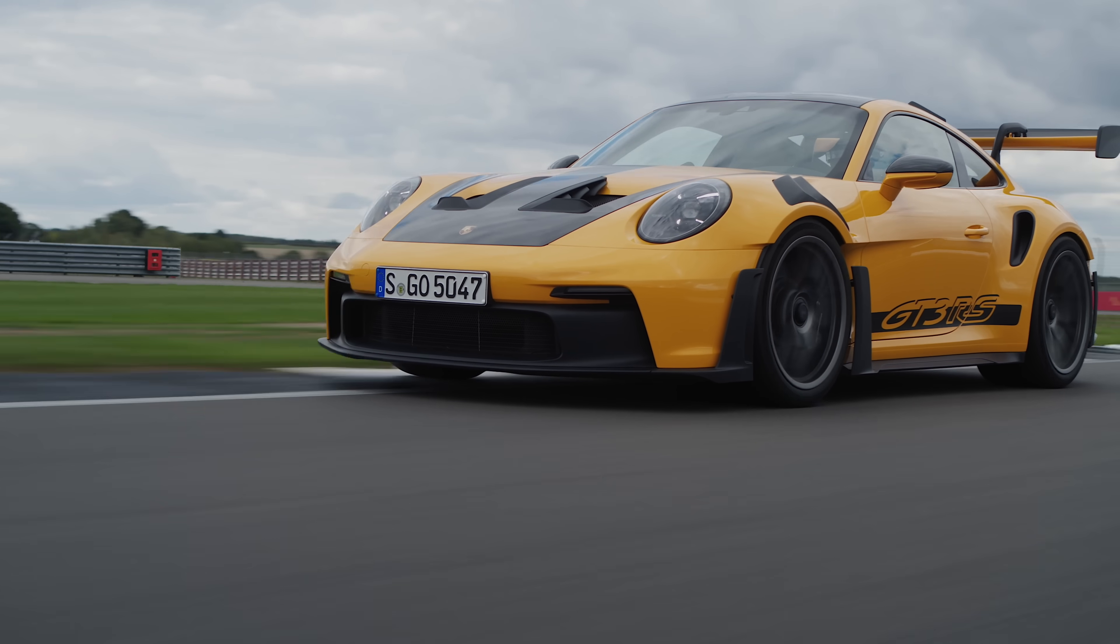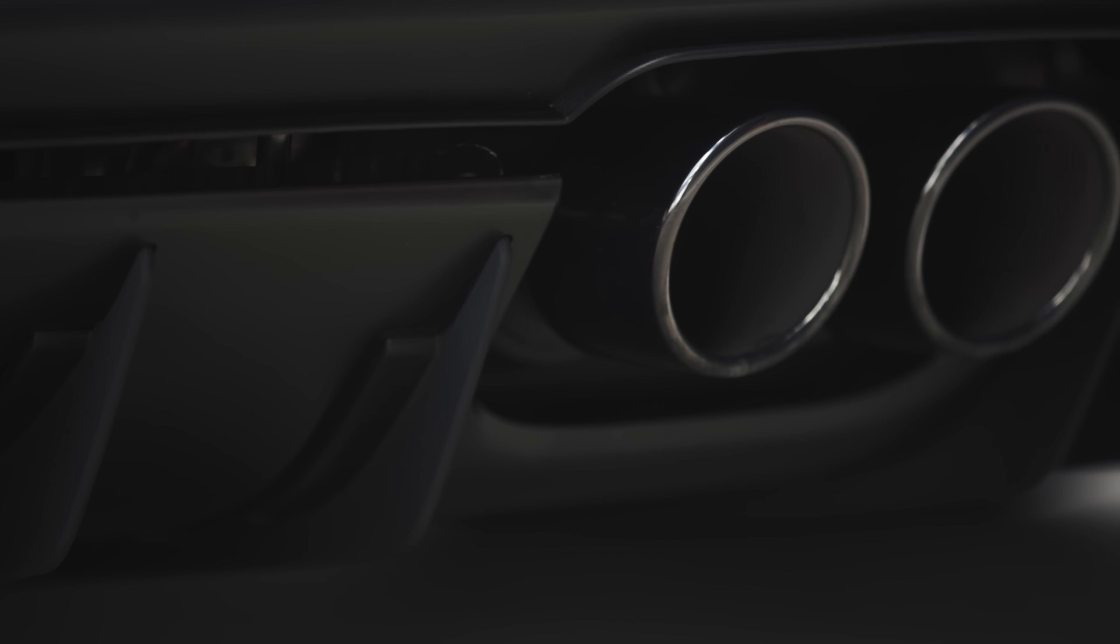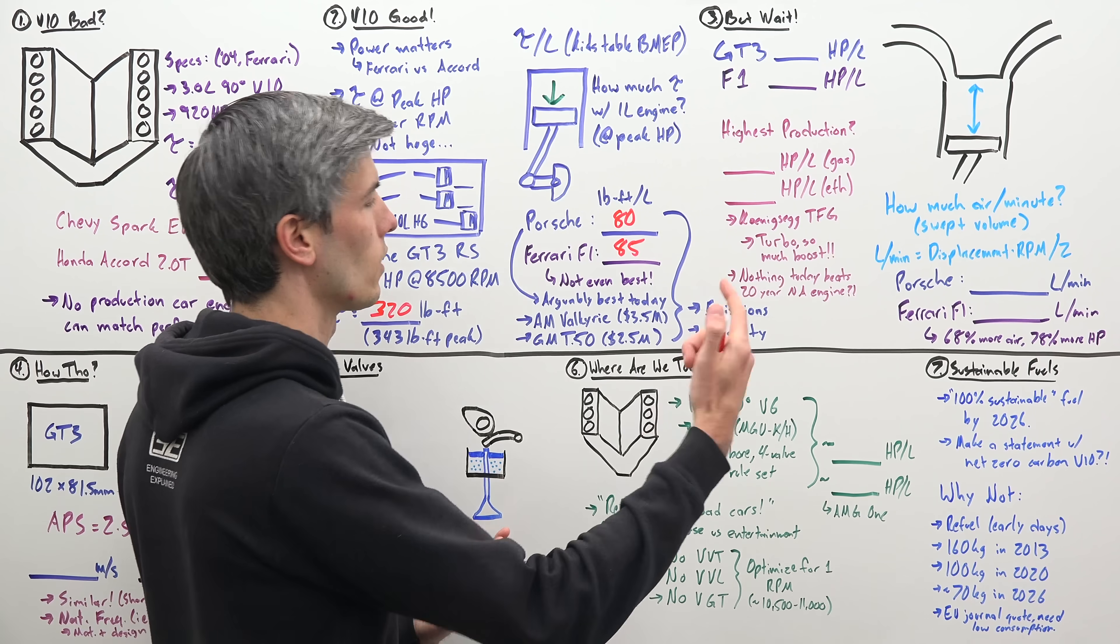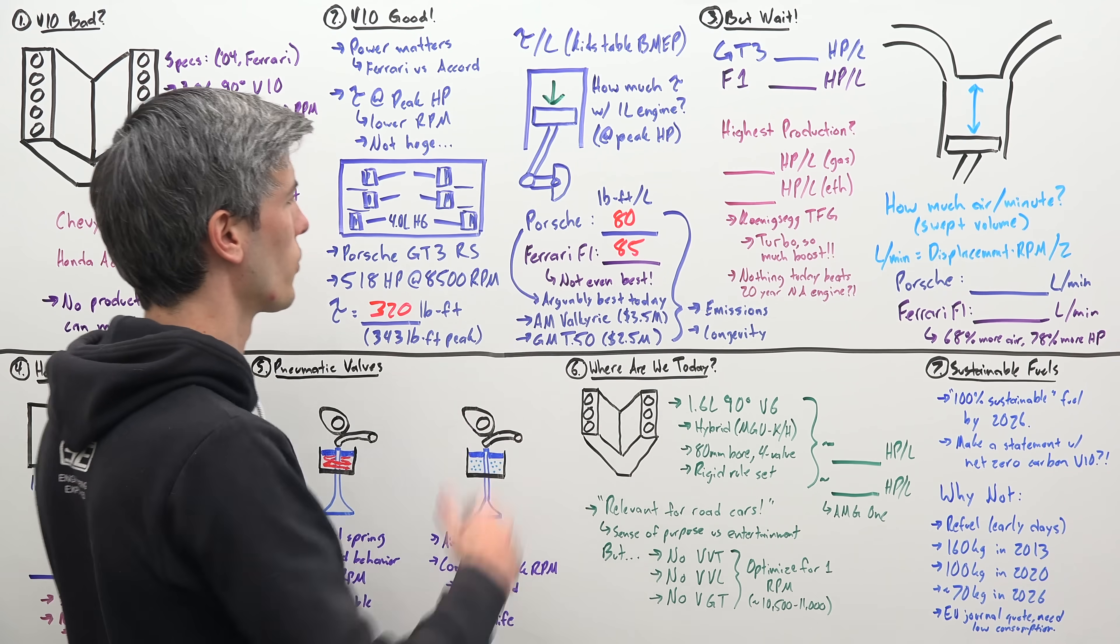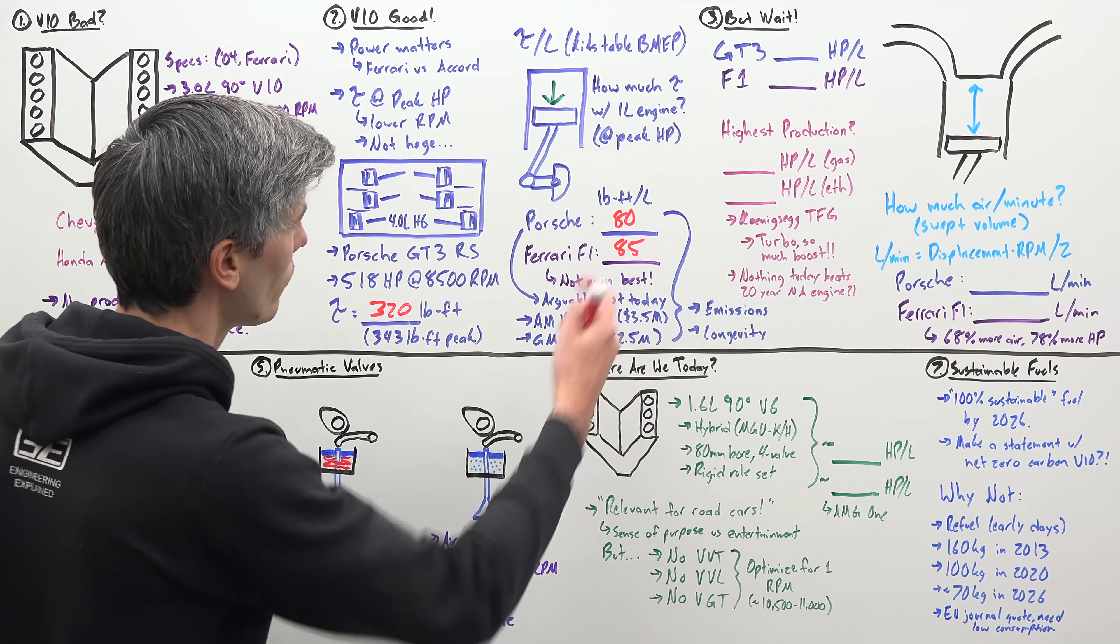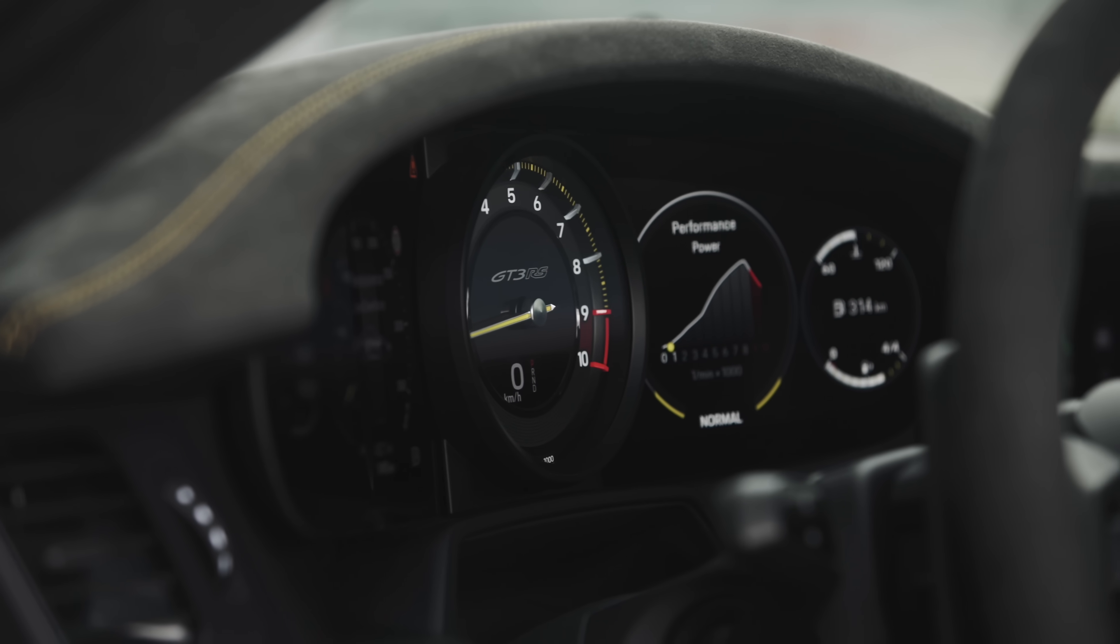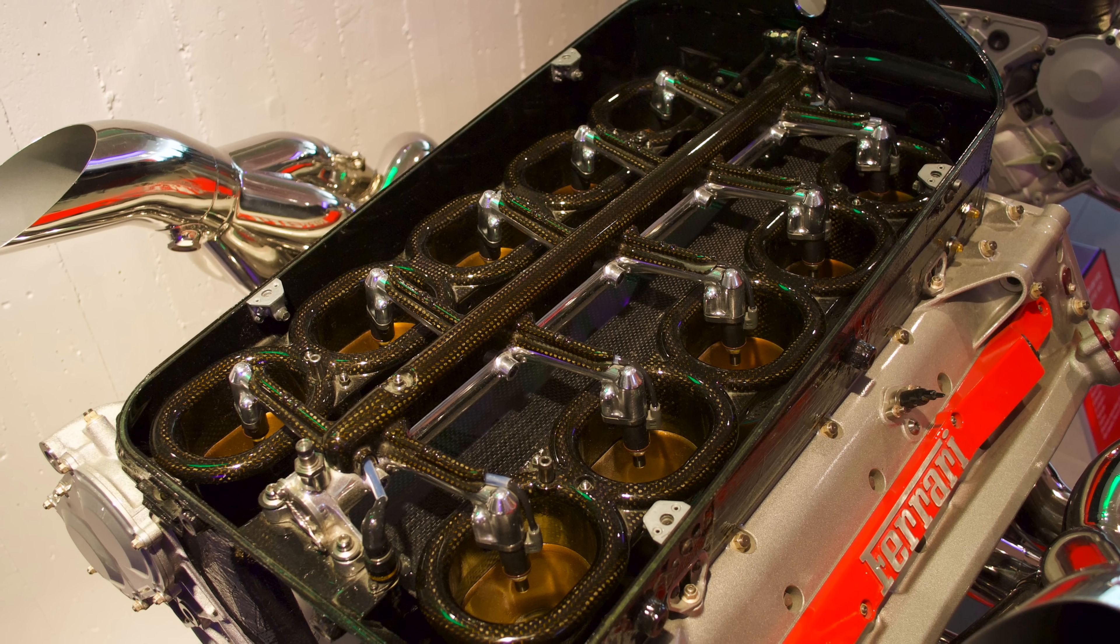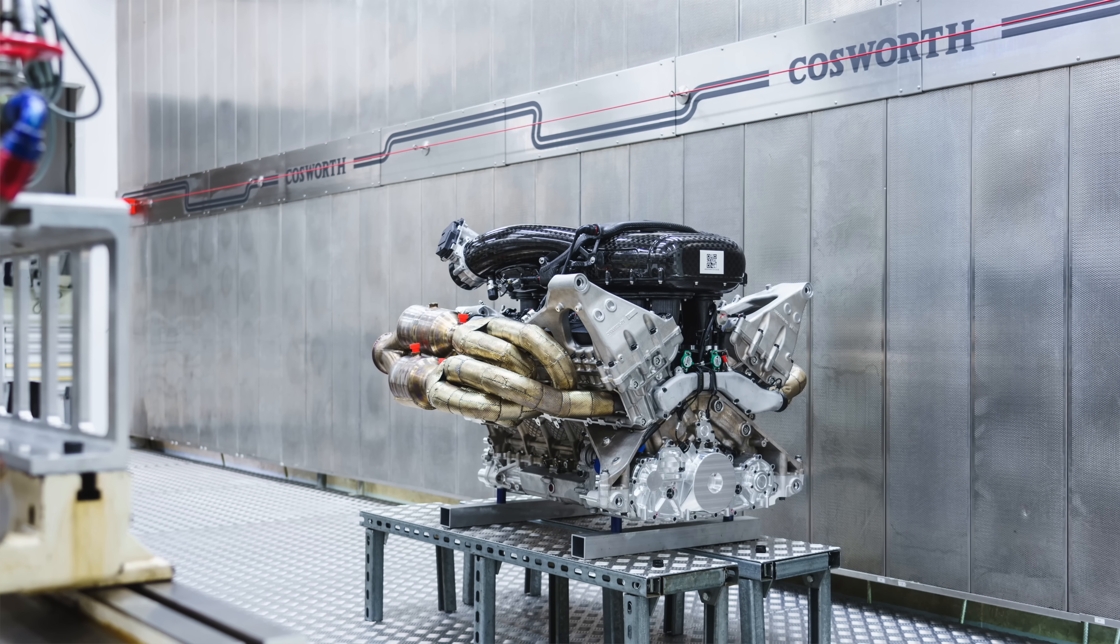Now, production cars do have some big factors working against them. Two of the major ones being emissions. For example, with the Porsche, you have to have this more restrictive exhaust. So of course, that means less power. And then longevity. The Porsche has to last 100,000 miles, 200,000 miles versus this Ferrari F1 engine needs to only last a race or two. You have to be much more conservative with your tuning because you need that thing to last a really long amount of time. Even still, it is pretty insane that an engine from 20 years ago cannot be beat by today's best technology in production cars.